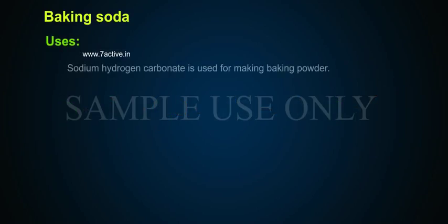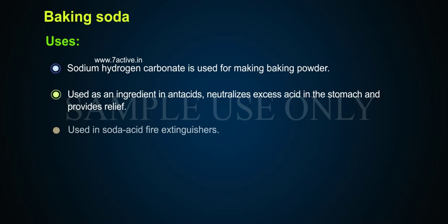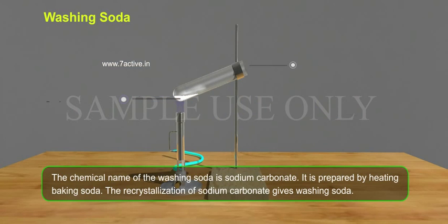Sodium hydrogen carbonate is used for making baking powder. It is used as an ingredient in antacids, neutralizing excess acid in the stomach and providing relief. It is also used in soda acid fire extinguishers.